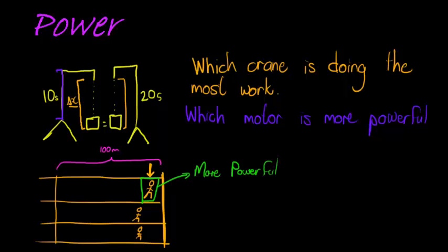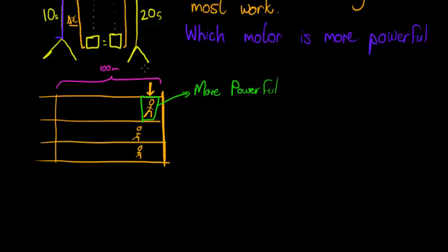So what do we define power as? Well, power is very simply the amount of work that you can do per second. So power, we use a capital P, is the amount of work that can be done per second. So work over time.